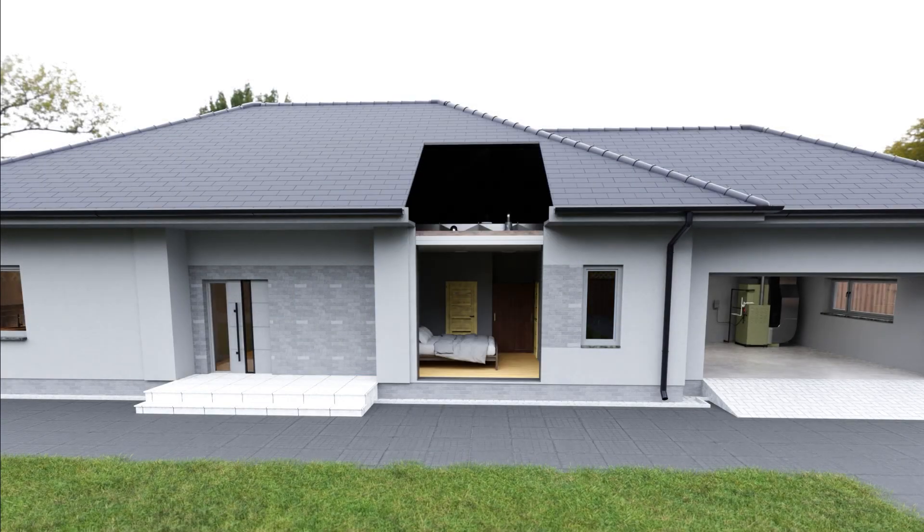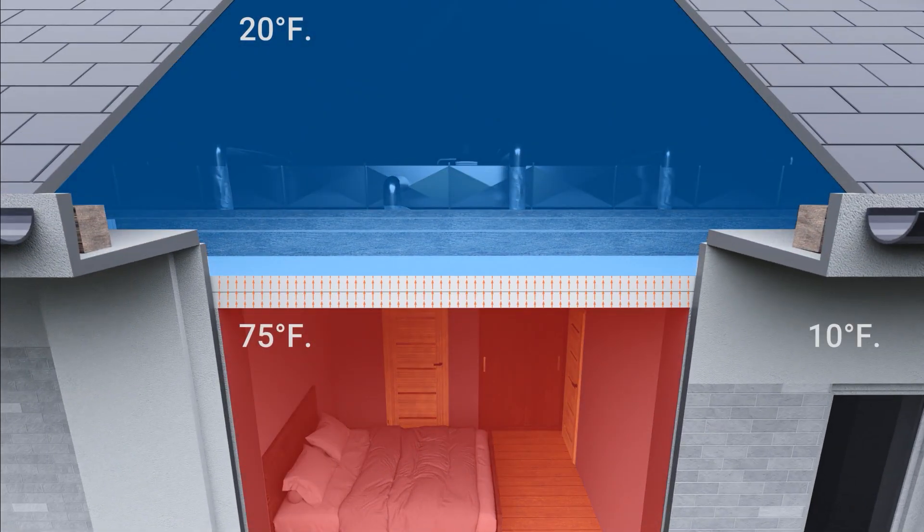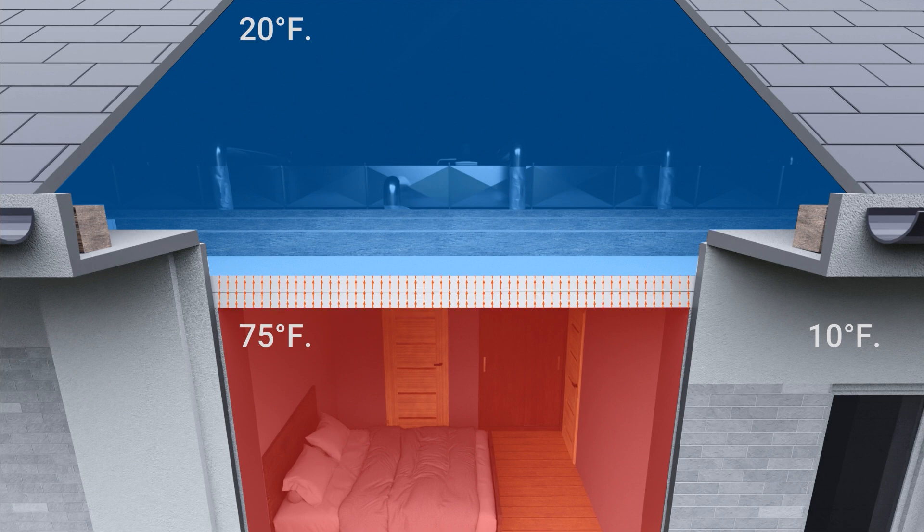In this example, we show a warm house and a cold attic. Heat is going to transfer through the ceiling and insulation from the hotter to the colder, or the higher temperature to the lower temperature.